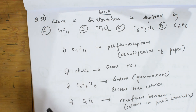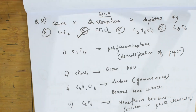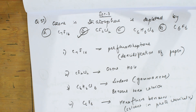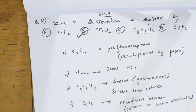Freons or chlorofluorocarbons are going to deplete the stratosphere because they have chlorine atoms which undergo free radical mechanism. These very fast free radicals cause ozone holes or ozone depletion. So the correct answer is CF2Cl2, which will cause stratospheric ozone depletion.